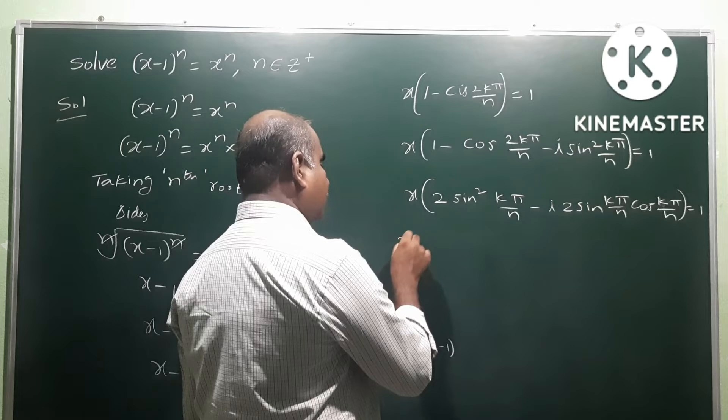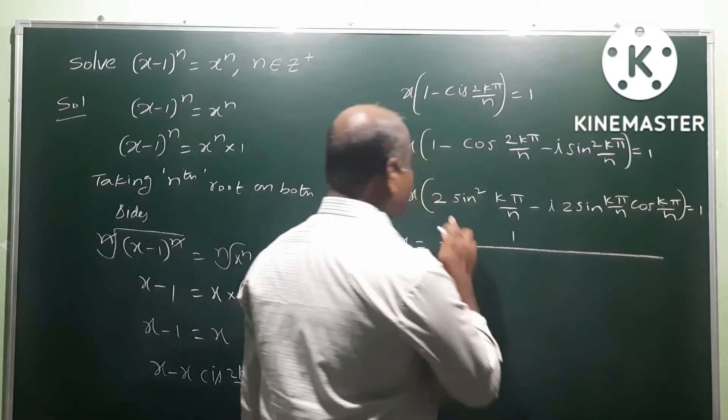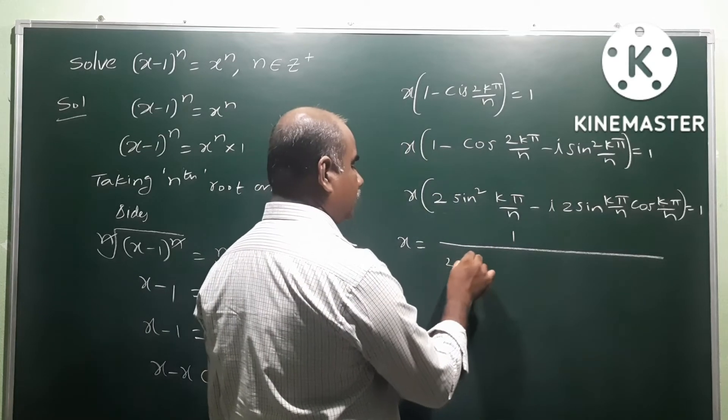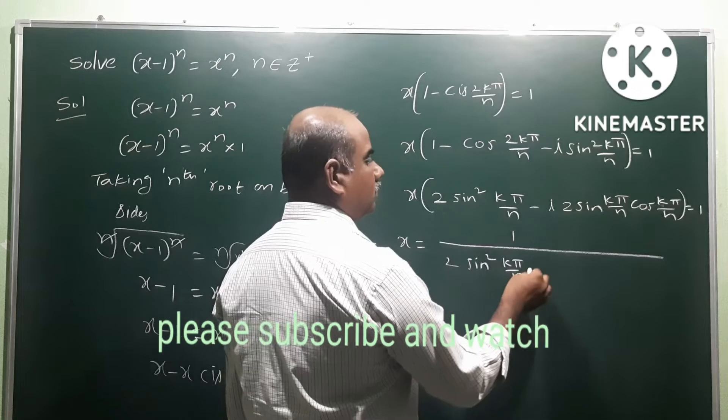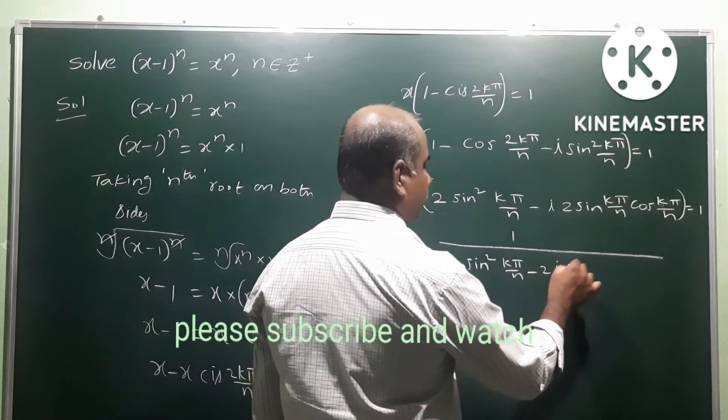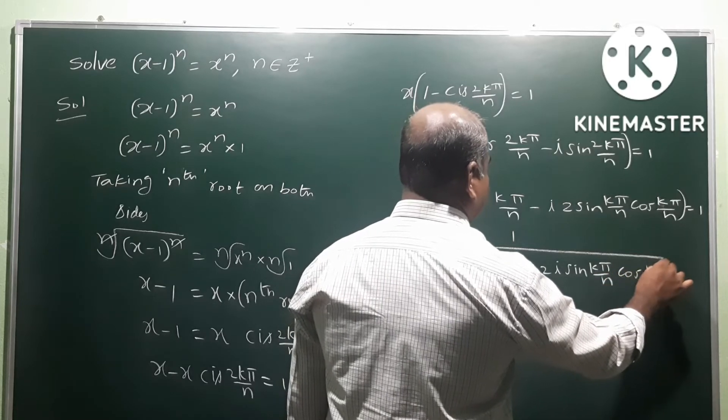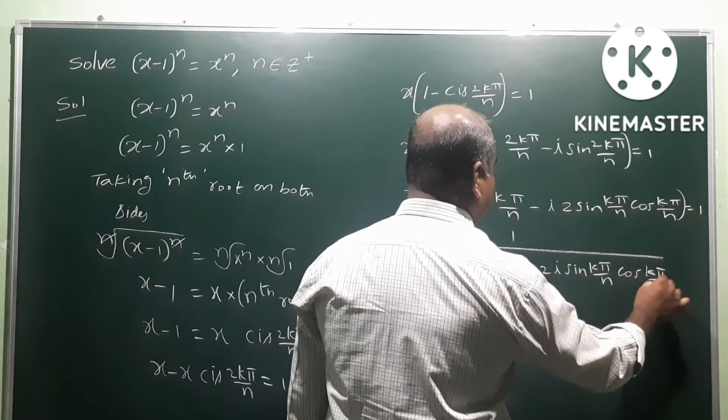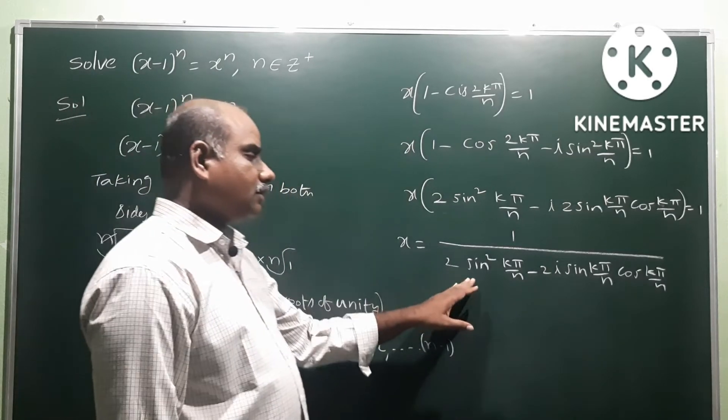Therefore x equals... this is equal to the right side. We get x times (2sin²(kπ/n) - 2i·sin(kπ/n)·cos(kπ/n)) equals 1.